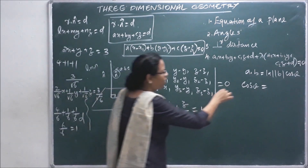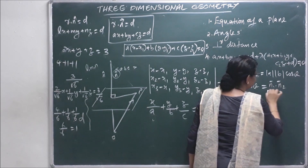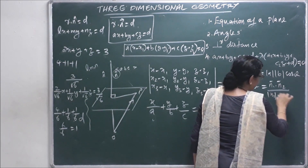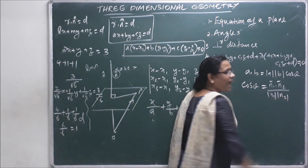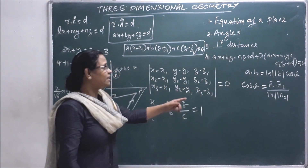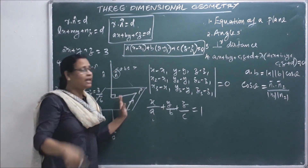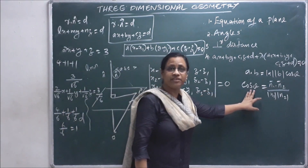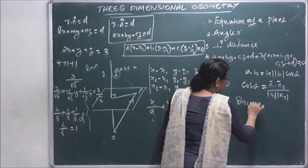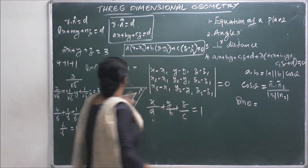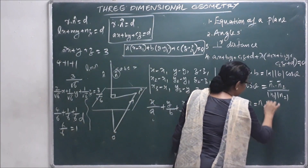The type of normal vector to each plane gives the direction ratio. For two planes with normals n₁ and n₂, we use their direction ratios to compute the angle. If the dot product of n₁ and n₂ is zero, the planes are perpendicular.